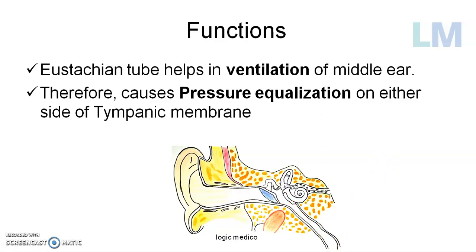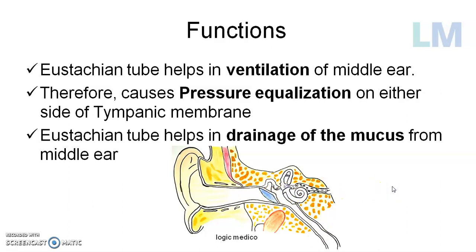Second, it helps in maintaining pressure equalization on either side of the tympanic membrane. Whatever the environmental pressure is in the external auditory canal, the same pressure will be maintained on the outside of the tympanic membrane. When air enters through the eustachian tube into the middle ear, the same pressure is maintained in the middle ear cavity as well. Third, the mucus produced by the mucous membrane of the tympanic cavity is drained into the nasopharynx.